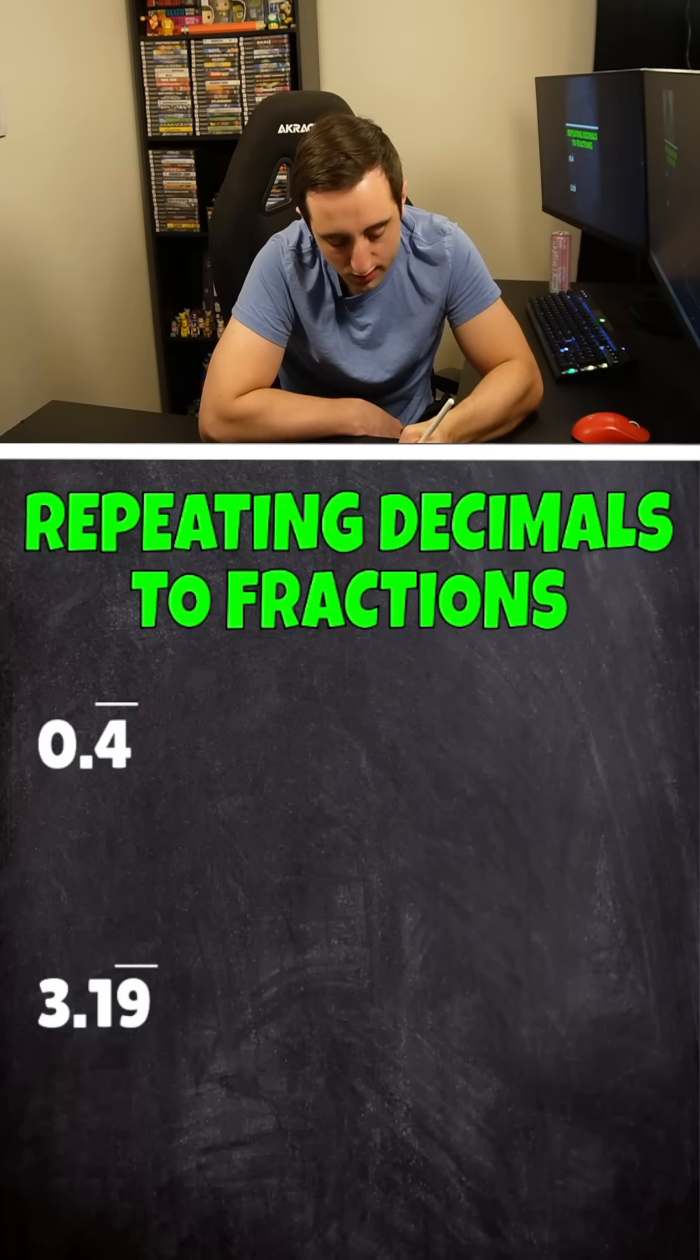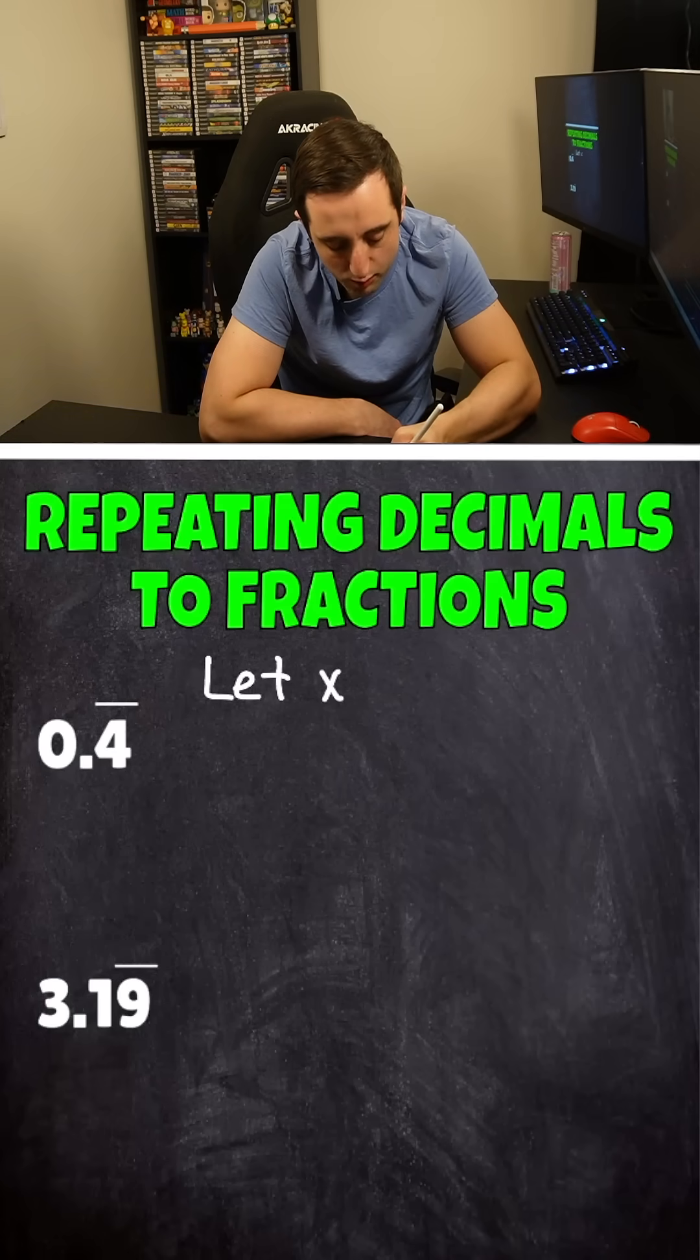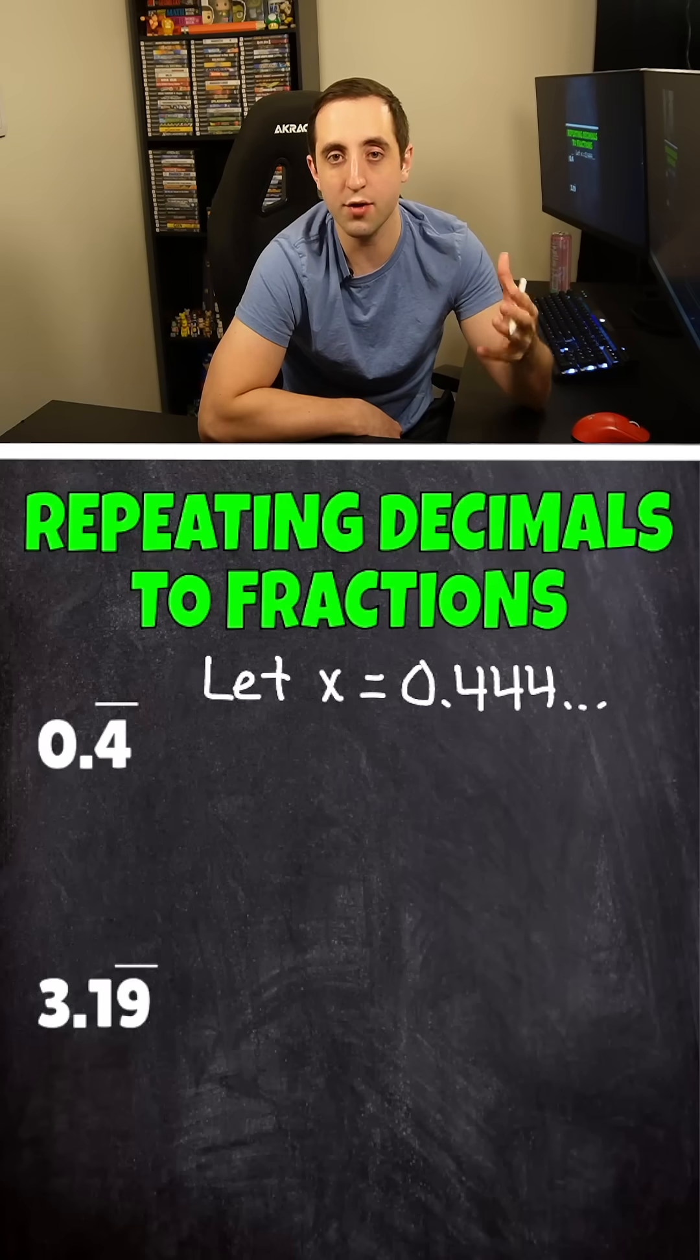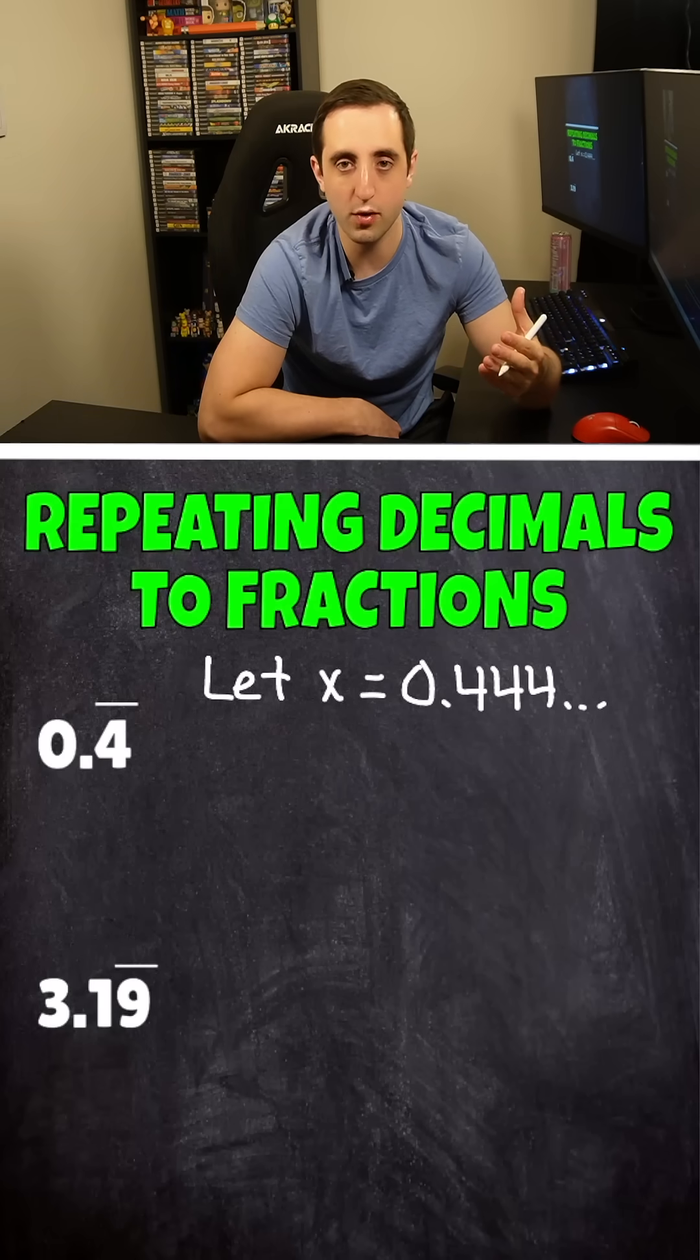So what we're going to do is we're going to come up with two equations. The first one's going to be we're going to let x equal whatever repeating decimal that we're working with. In this case, it's 0.4 repeating. So I'm going to show that 4 repeating a few times. And then to come up with our other equation, it's all dependent upon how many numbers are repeating. In this case, we have one number repeating.